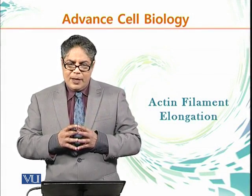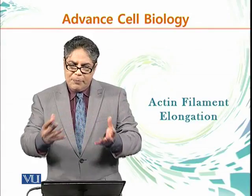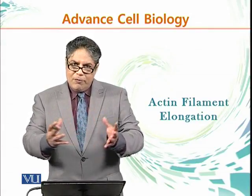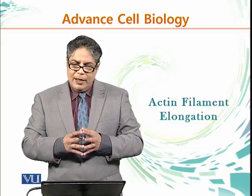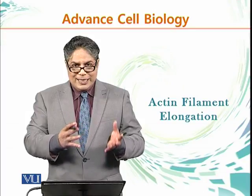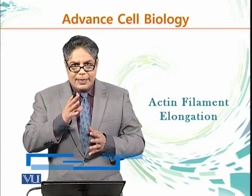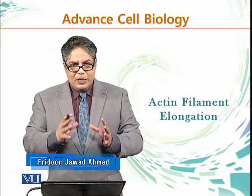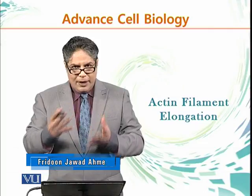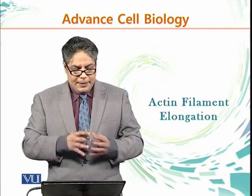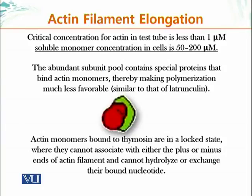The cytoskeleton is a dynamic structure — you need to form it and also depolymerize it. There are plenty of actin monomers present in the cell that can cause pre-existing actin filaments to elongate. The critical concentration for actin in a test tube is one micromolar, while the soluble monomer concentration in cells is 50 to 200 micromolar — a great excess.